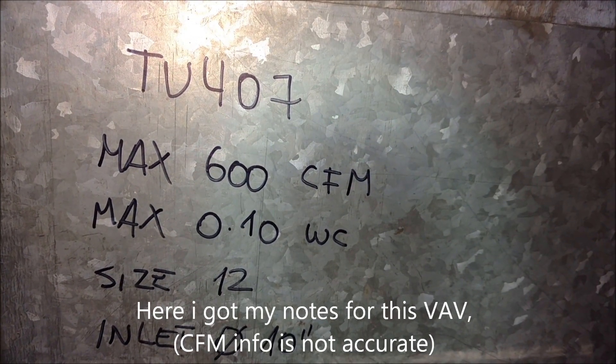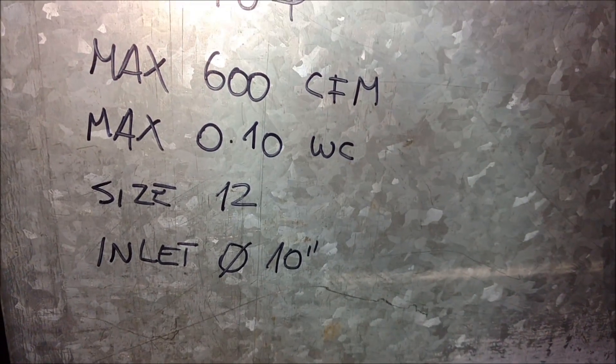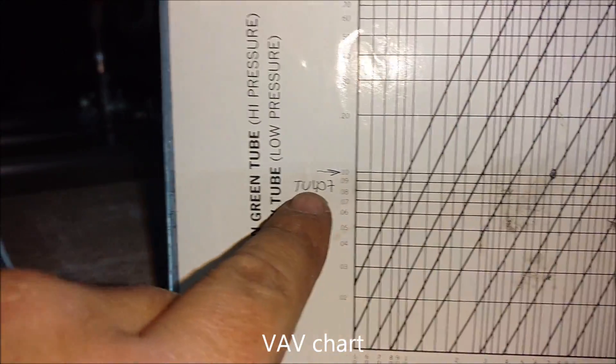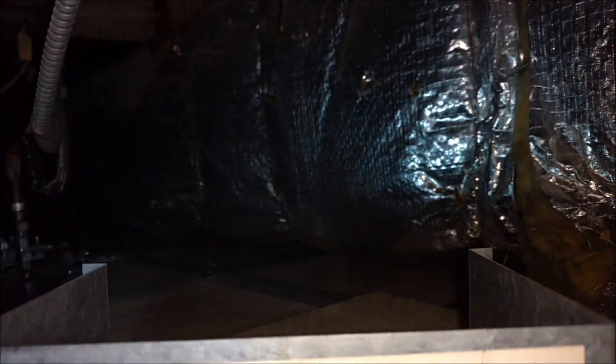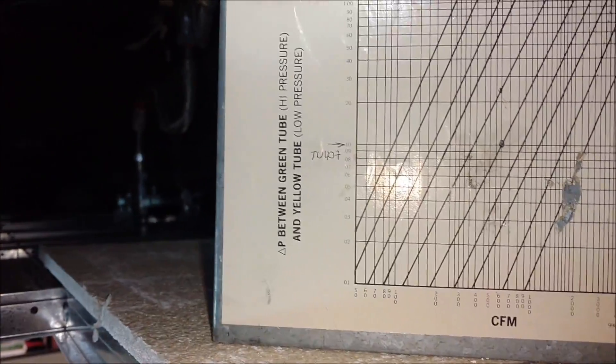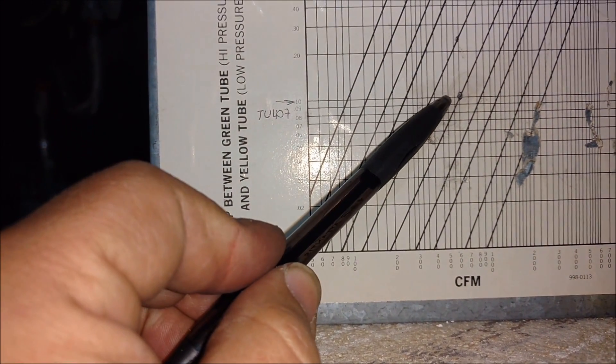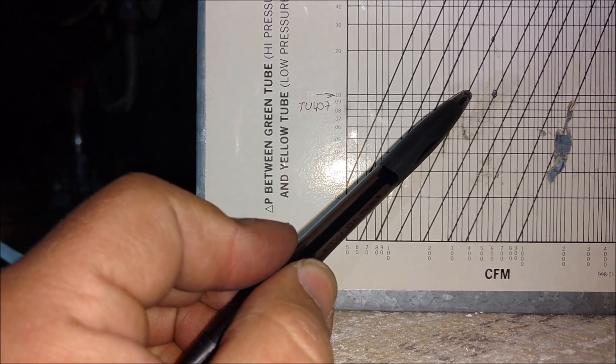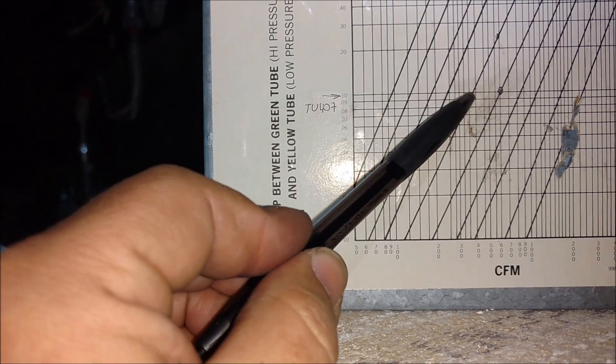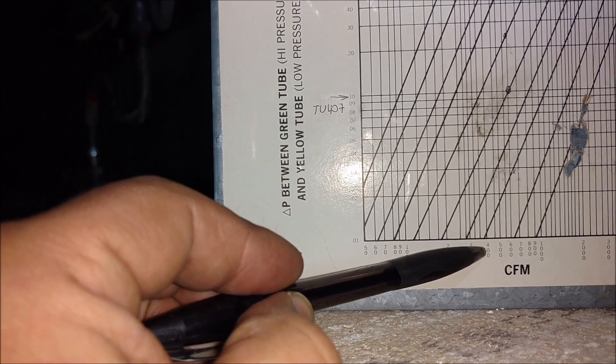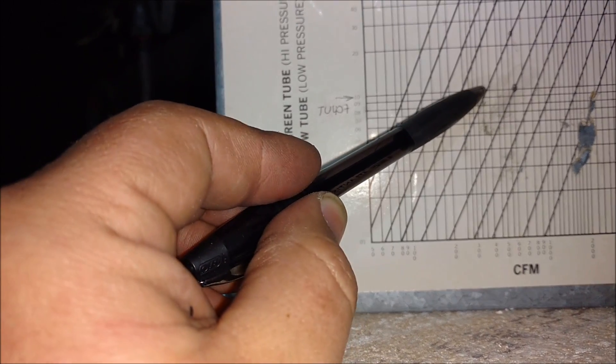My VAV is a TU-407. This is the information regarding this VAV. The controller comes with a little chart. For my VAV, the inlet is 10 and the size of the box is 12. So we should have 350 CFM maximum for that VAV.